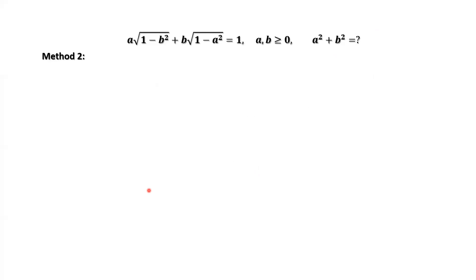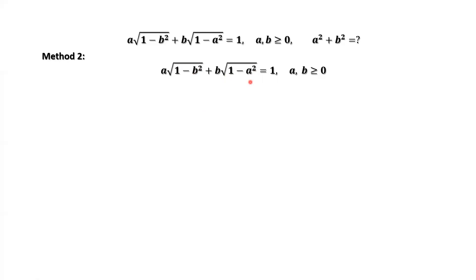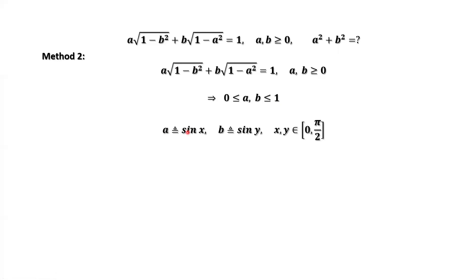Method 2. This is the given condition. Since (1 minus b squared) is inside a square root, we need 1 minus b squared to be greater than or equal to 0. Similarly, 1 minus a squared must be greater than or equal to 0. This implies both a and b must be between 0 and 1. So we can define a equals sin x and b equals sin y, with both angles x and y in the first quadrant, from 0 to π/2.